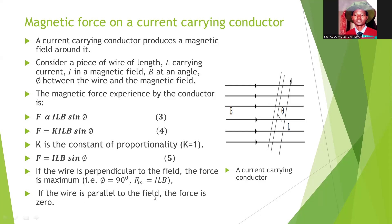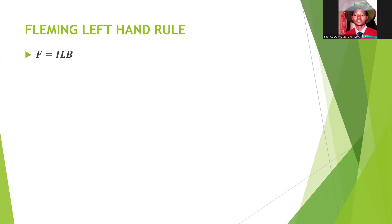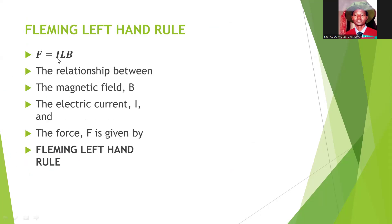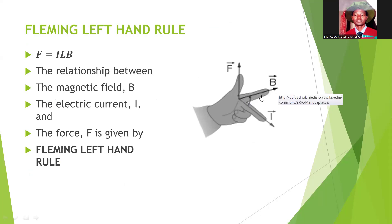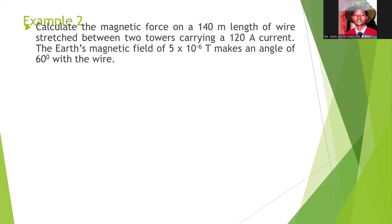But if the conductor or wire is parallel to the field, it will experience no force — the force will be equal to zero. To remember the relationship between the force, the current, the length of the conductor, and the magnetic field, we have Fleming's left hand rule. If you stretch out your left hand, the thumb represents the force, the first finger represents the field, and the second finger represents the current.